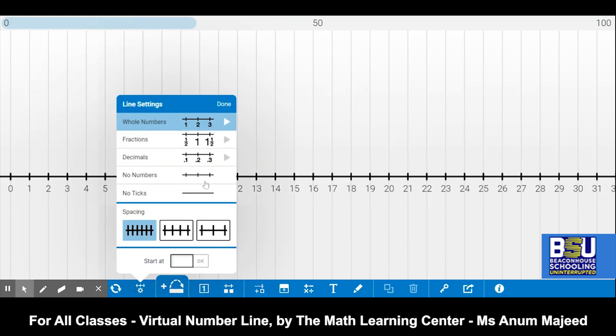It is going to show me which type of numbers I want to see on the number line. I can select fractions, I can select decimals. I can choose the starting number by myself. As you can see, right now there are no negative numbers over here, but if I'm going to put a negative number in the box, they will change the number line accordingly.